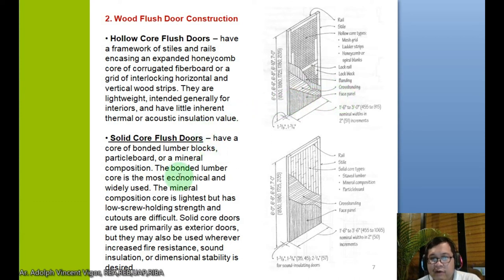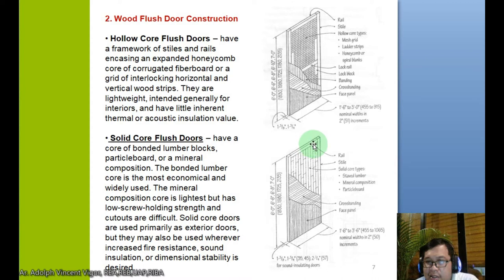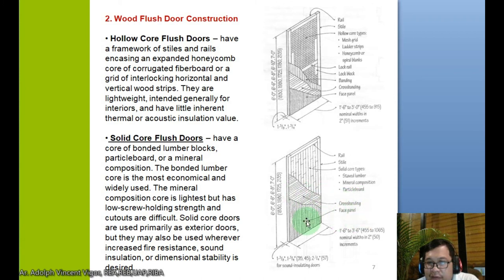Solid core flush doors have a core of bonded lumber blocks, particle board, or mineral composition. The bonded lumber core is the most economical and widely used. The mineral composition core is the lightest but has low screw-holding strength and cutouts are difficult. Solid core doors are used primarily as exterior doors, but are also used wherever fire resistance, sound insulation, or dimensional stability is required. Components include the rail, stile, solid core of bonded lumber, mineral composition, or particle board, cross banding, and face panel.